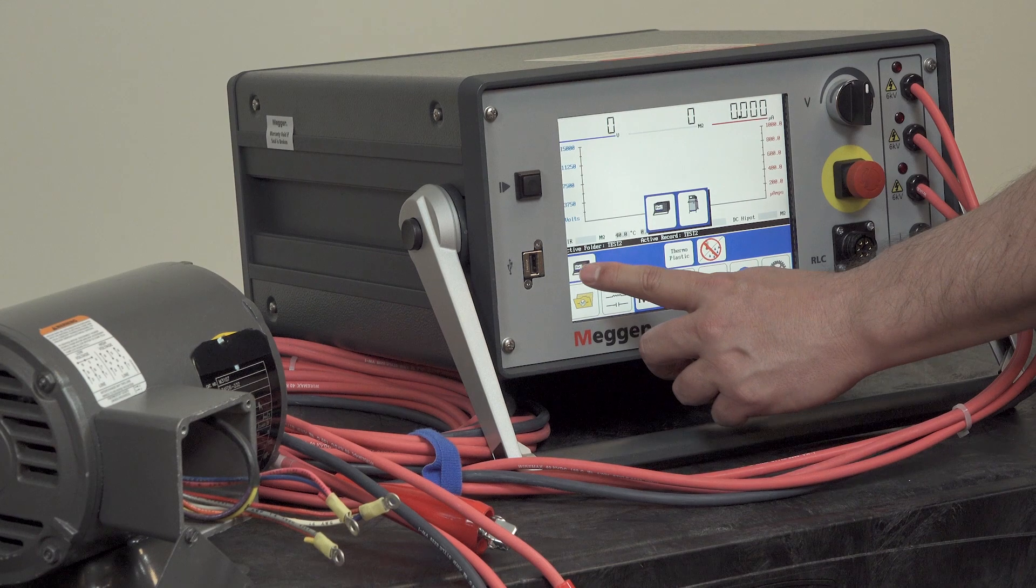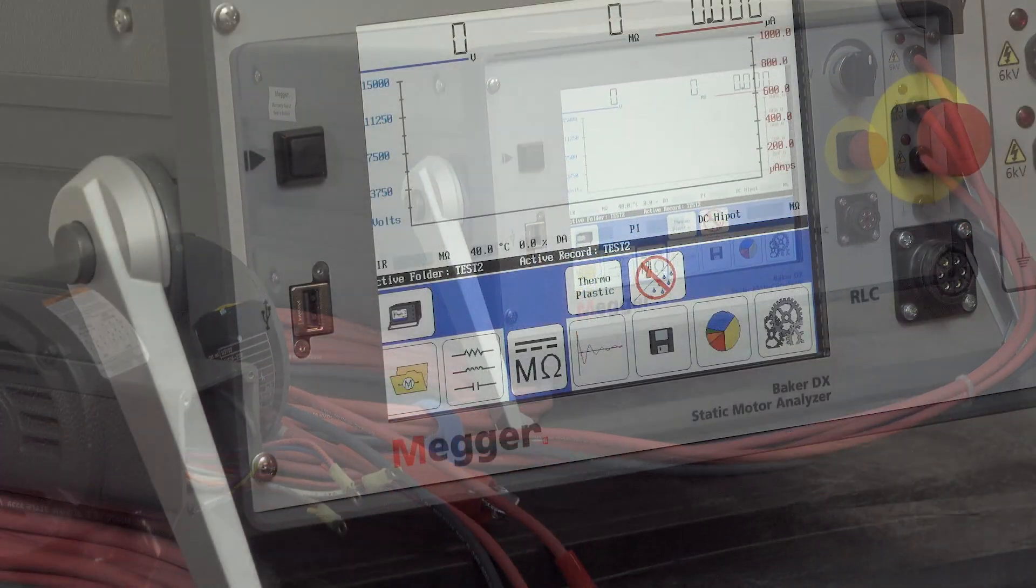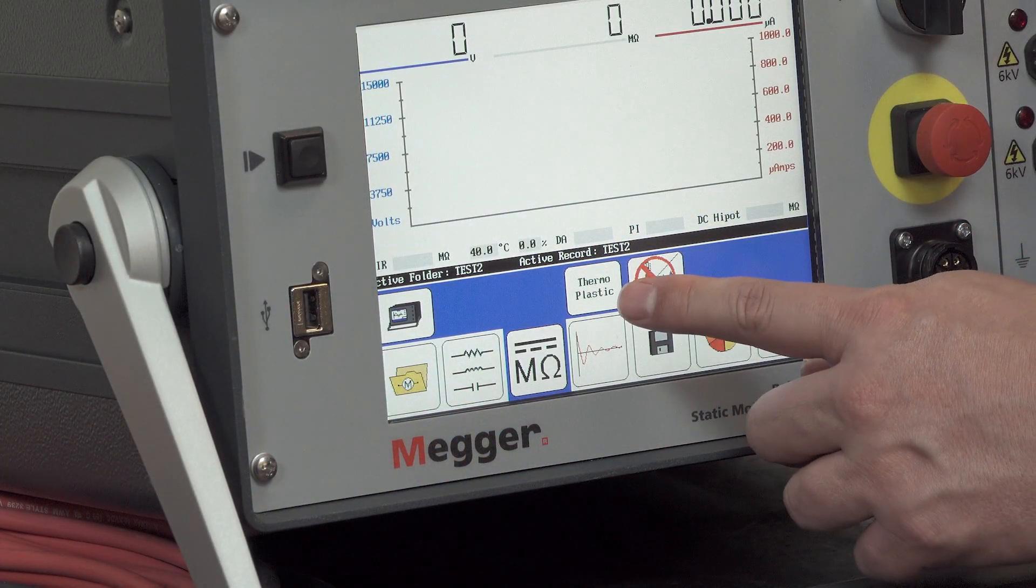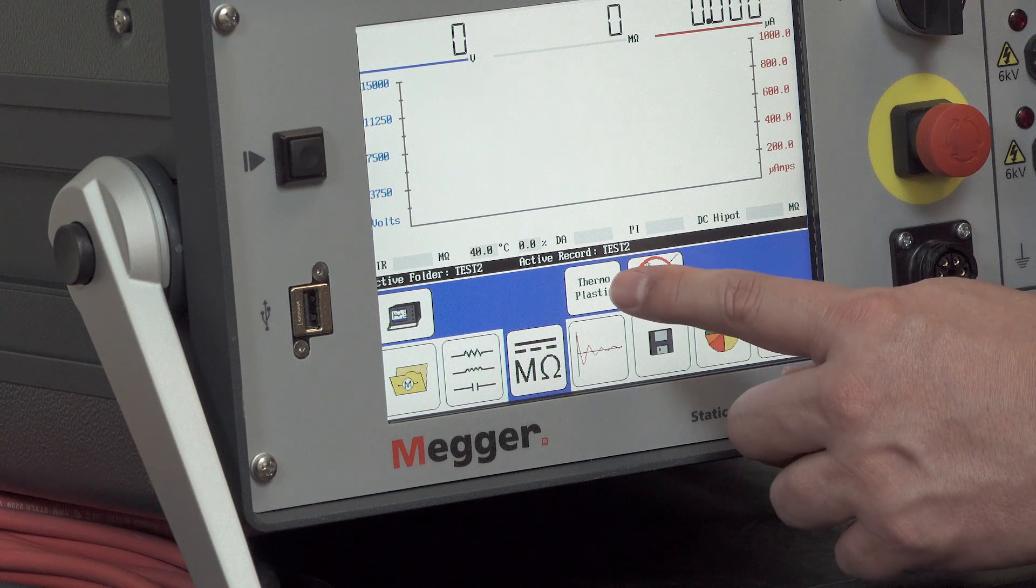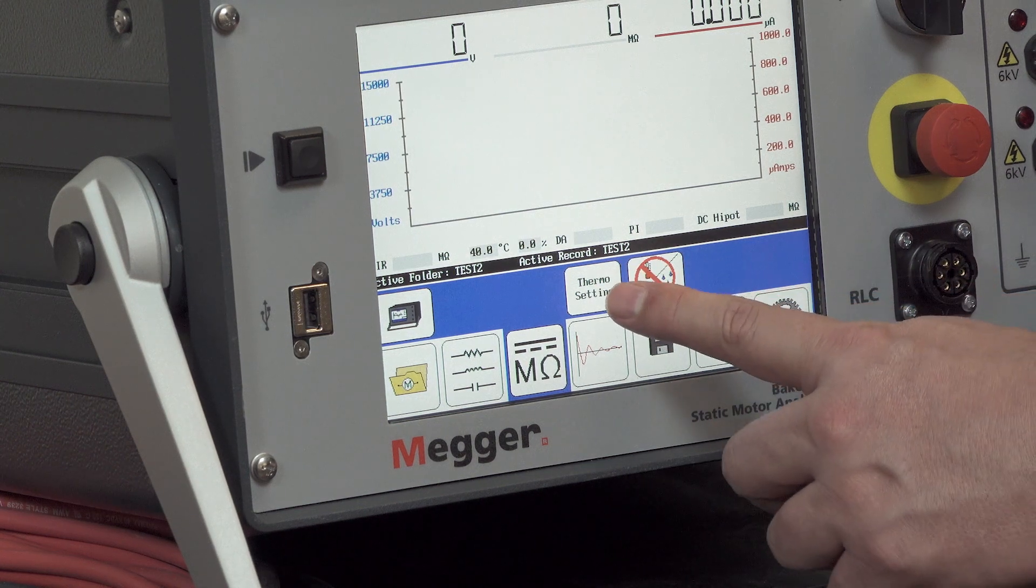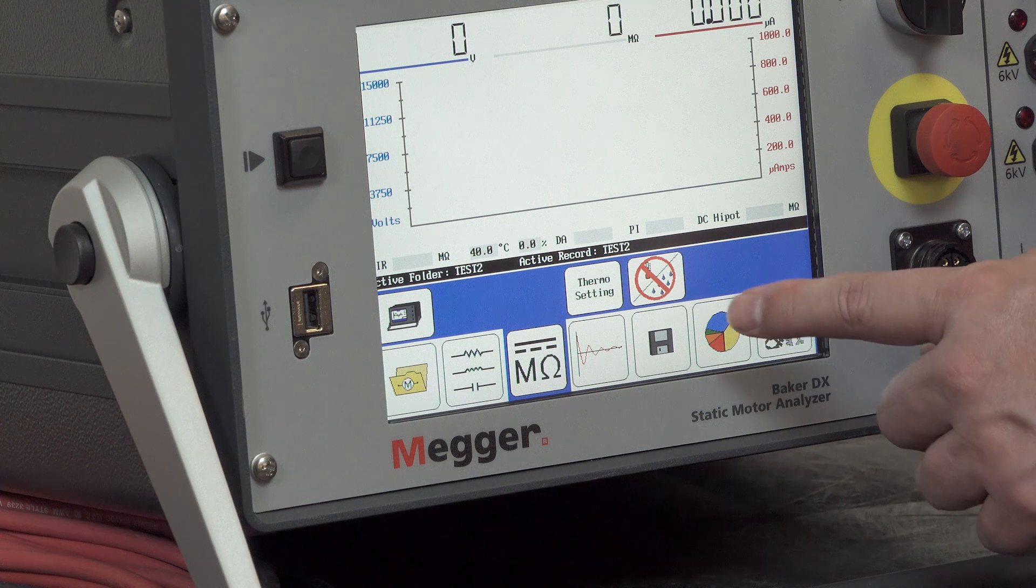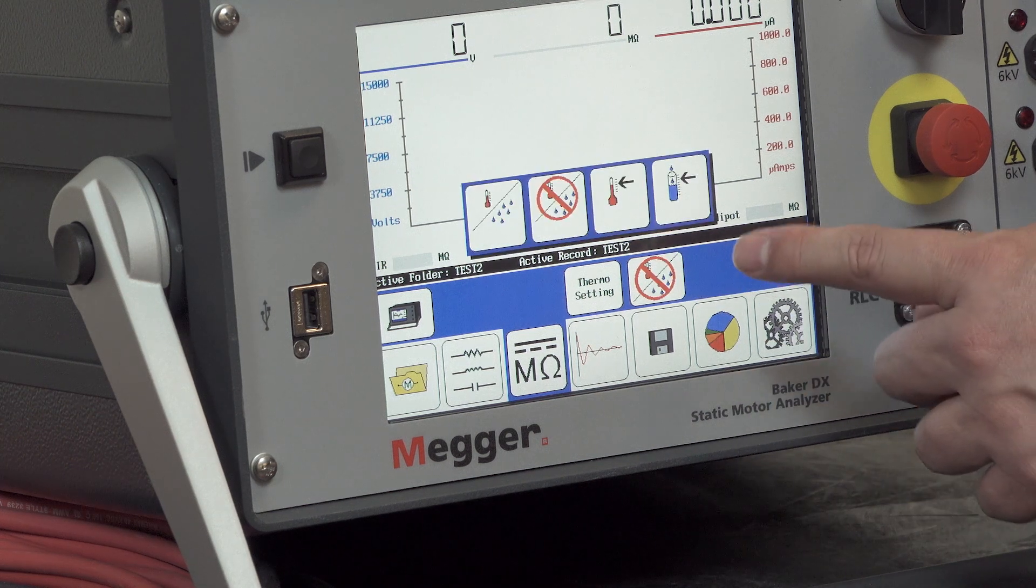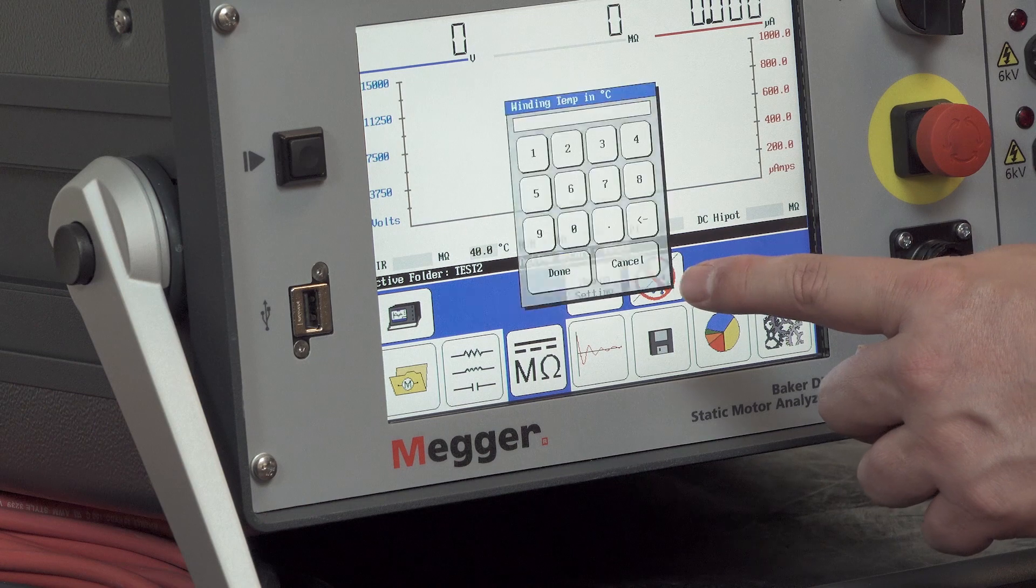Next we'd like to select the proper temperature correction formula for the insulation under test. In this case it's thermal setting insulation, and now I want to establish the temperature correction. I'm going to enter a temperature of the winding, in this case 21 degrees Celsius, done.